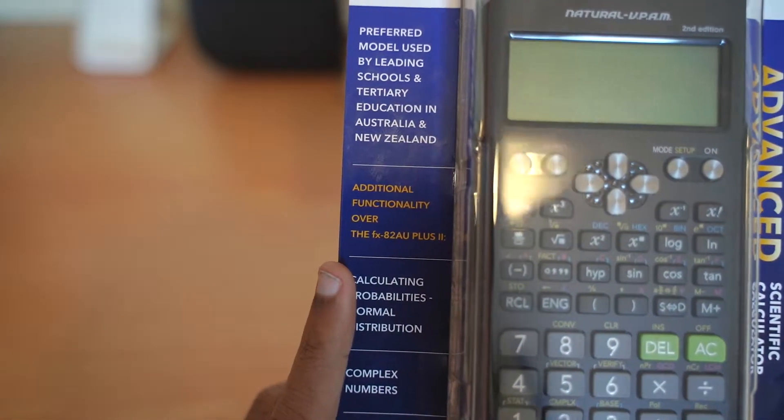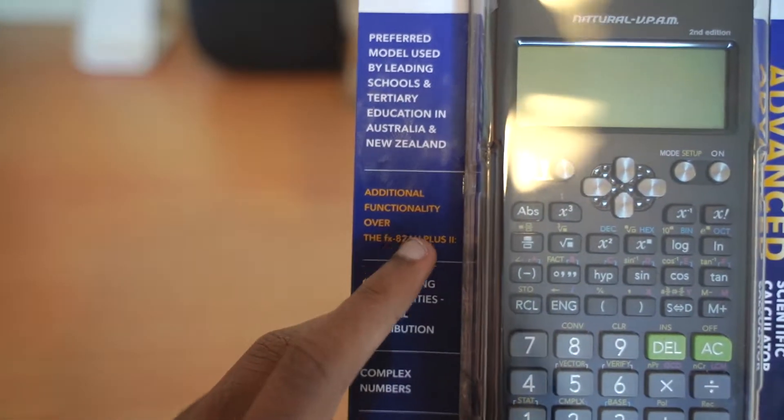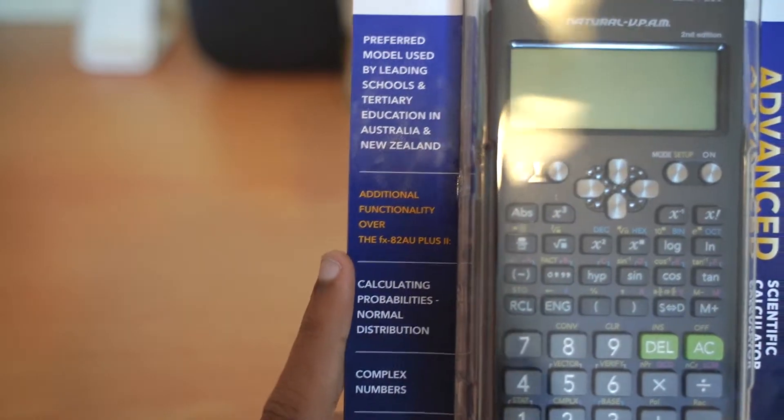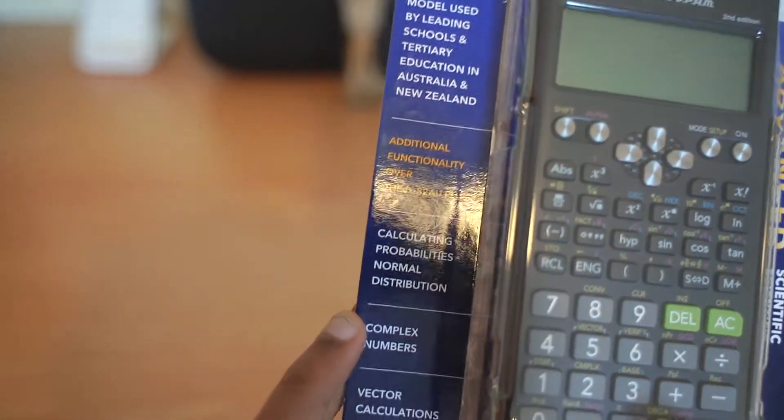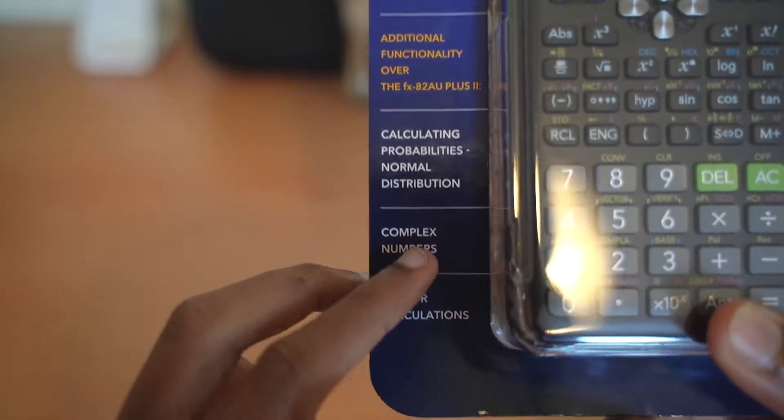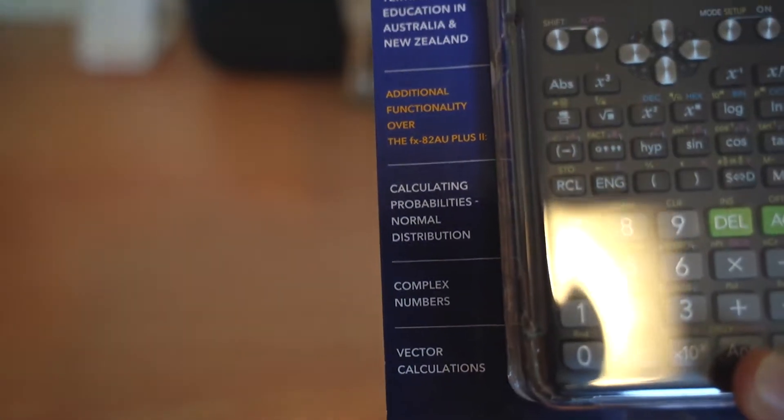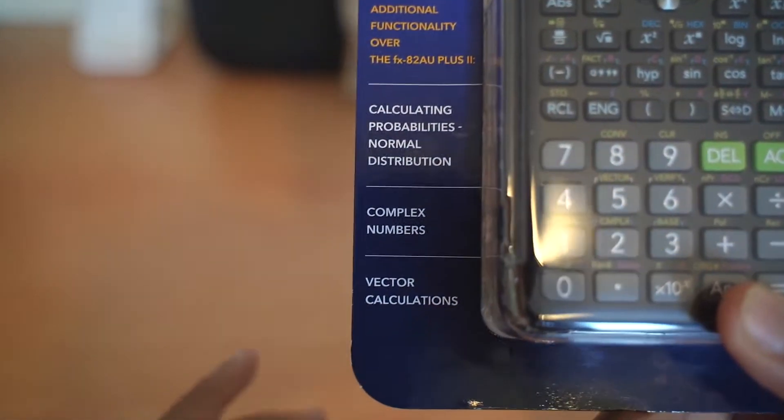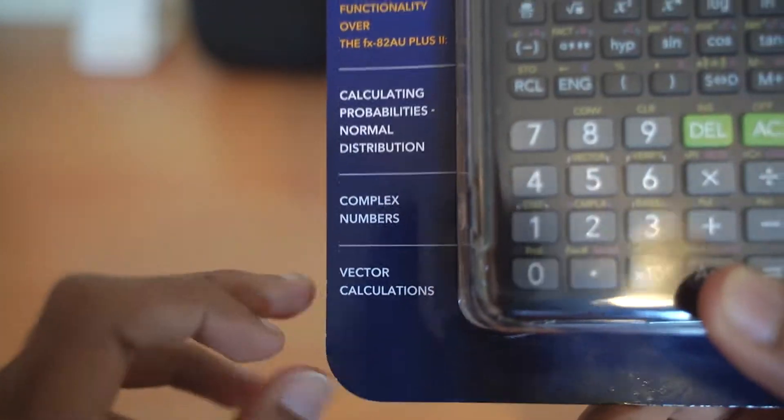This is for more than the FX82AU plus 2. You can calculate probability and normal distribution. Most importantly the complex numbers. You cannot do it with the FX82AU plus 2. And there are going to be some vector calculations.